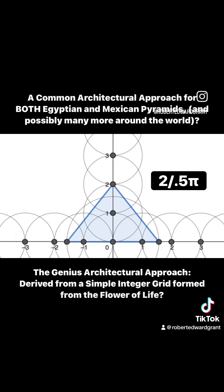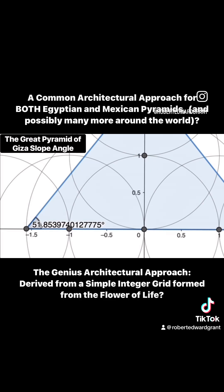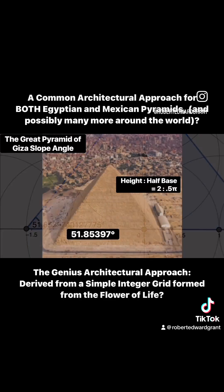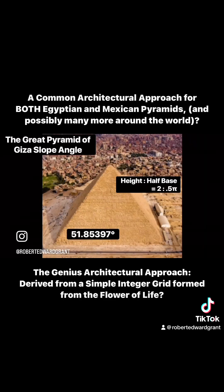This might look a little familiar to you because it matches exactly the slope angle of the Great Pyramid: 51.8539 degrees, which is two over one-half pi — one-half pi being the half base and two being the height.